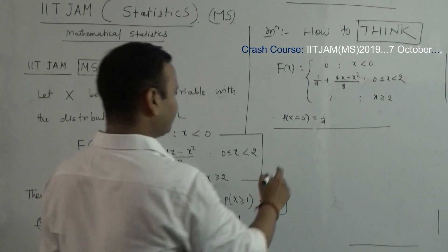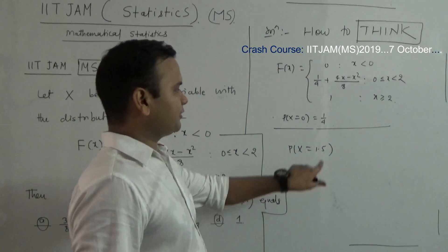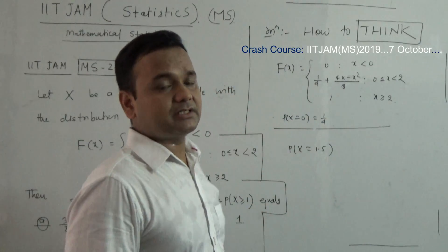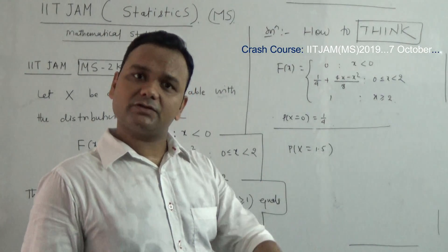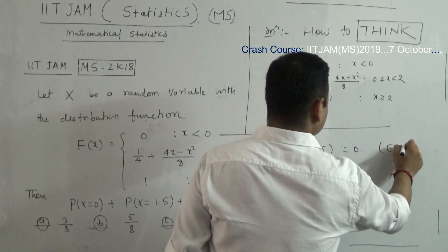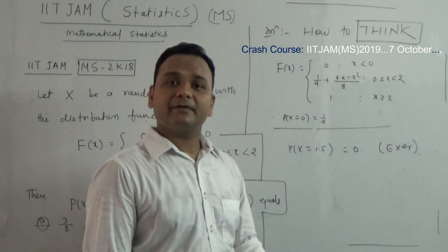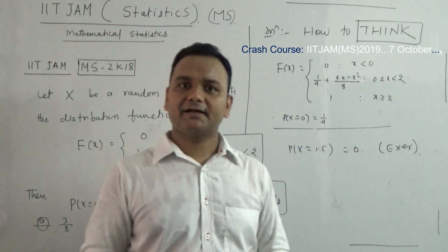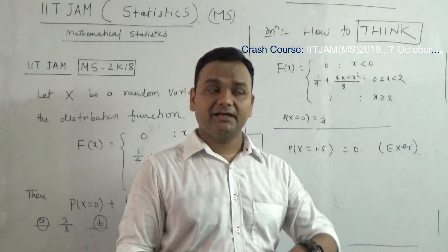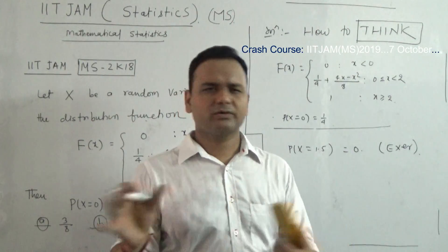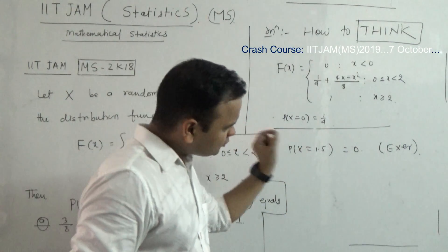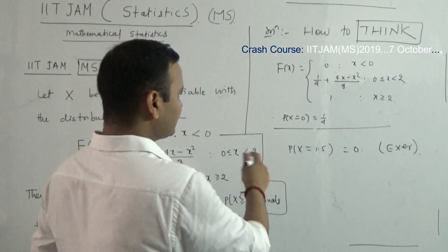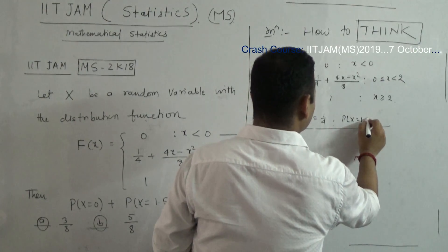Now, probability at X equal to 1.5 — since 1.5 is between 0 and 2, the distribution function is continuous at this point. If the cumulative distribution function is continuous at a certain point, the probability at that point is equal to 0. I will leave this as an exercise — write your reasoning in the comments and if correct I will appreciate it, otherwise I will give the correct answer and make another video on continuity and discontinuity.